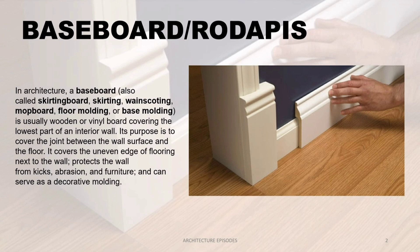Baseboard — in our vernacular term we call it 'rodapis.' In architecture, a baseboard is also called skirting board, skirting, wainscotting, mop board, floor molding, or base molding. A baseboard is usually a wooden or thin board covering the lowest part of an interior wall. Its purpose is to cover the joint between the wall surface and the floor, cover the uneven edge of flooring next to the wall, protect the wall from kicks and abrasion from furniture, and it can also serve as a decorative molding.